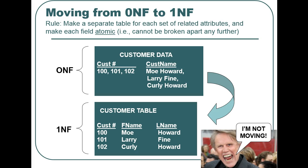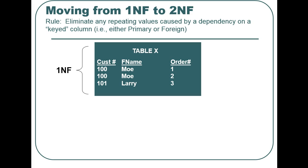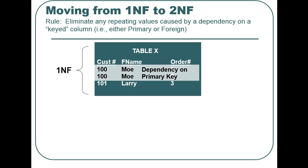When we move to the second level of normalization, or second normal form, we begin to eliminate redundant data. In this example, we have a table with repeating values — customer number 100 appears twice in our table. Notice that the repeating values are also linked to or dependent on the primary key of the table. The rule for second normal form does not allow any repeating values that are linked or dependent on a primary or foreign key.